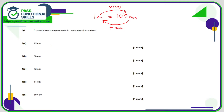Here we're going centimeters to meters, so we need to divide by 100. If you're struggling to divide 25 by 100, write 25 with some zeros in front of it and put in a decimal point and a zero. When dividing by 100, because 100 has two zeros, we're moving the decimal point two positions to the left, because we're making this number smaller.